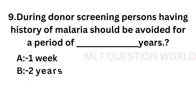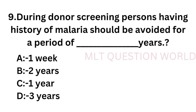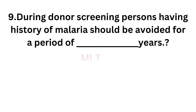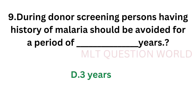Question number 9: During donor screening, persons having a history of malaria should be avoided for a period of how many years? Option A: 1 week, option B: 2 years, option C: 1 year, option D: 3 years. The correct answer is option D, 3 years. A person having malaria should be avoided for a period of 3 years during donor screening.